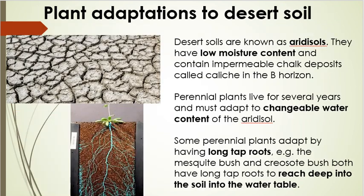Desert soils are called aridisols. As you'd expect, they have a very low moisture content and also contain impermeable chalk deposits — meaning water cannot pass through them. These impermeable chalk layers are called caliche and are found in the B horizon, which is the third layer of soil below the O horizon and the A horizon. This impermeability is a big problem for plants trying to access water.